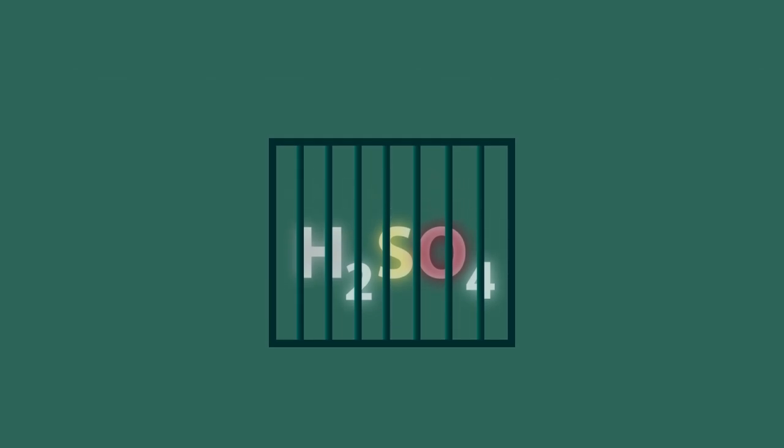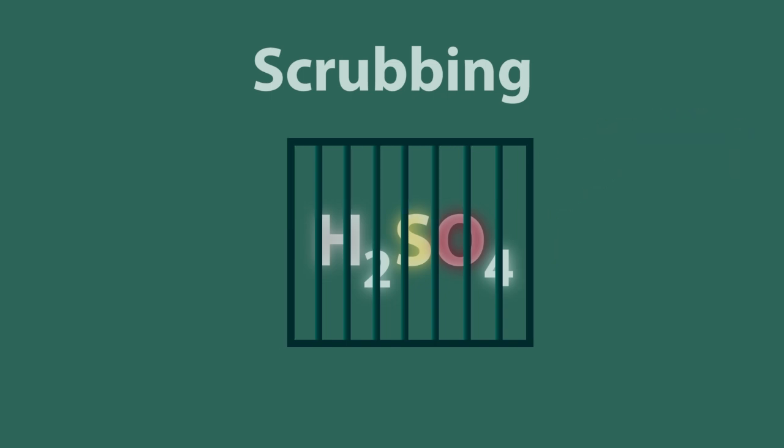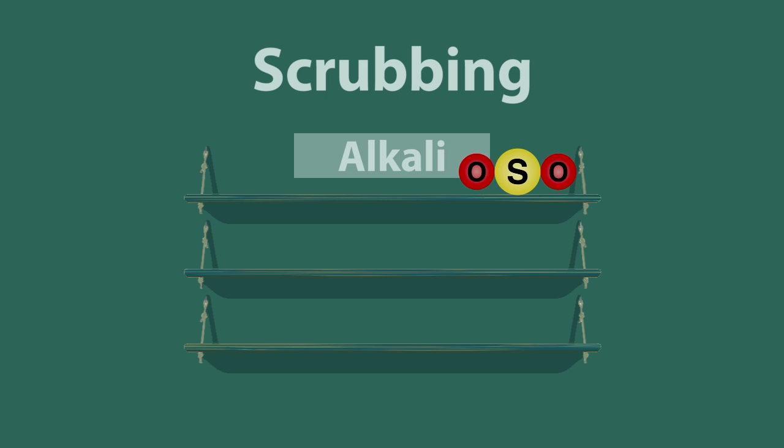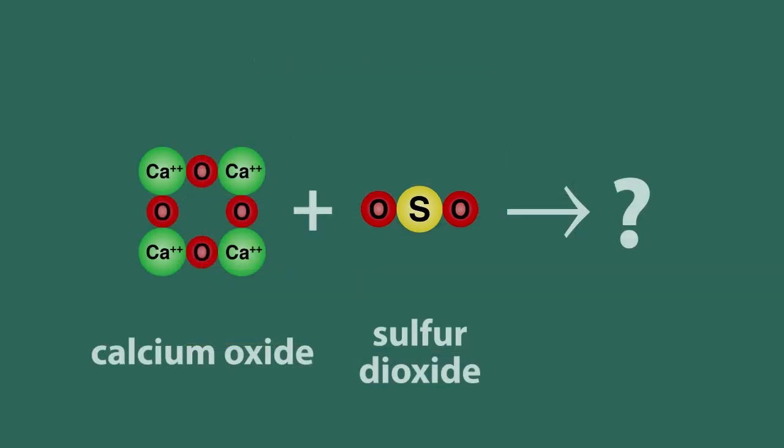A much better method is to trap the acid before it reaches the atmosphere in a process called scrubbing. The kind of scrubber we need in this case is an alkali to react with the sulfur dioxide. So either seawater, which contains a little bit of sodium carbonate, or lime, calcium oxide, is used. Can you think what reaction will occur with calcium oxide, a basic oxide, and sulfur dioxide, an acidic oxide?